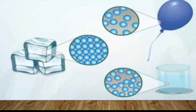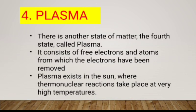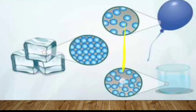Gas has a different shape and a different volume. When liquid is placed in a container, it takes a different shape but the same volume. Solids have a fixed position; their molecules do not flow freely.